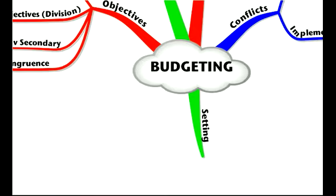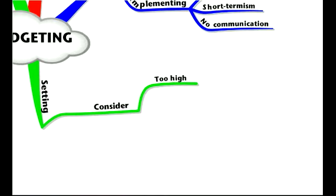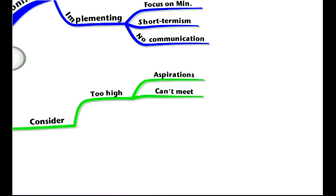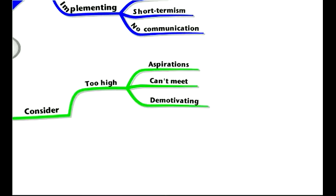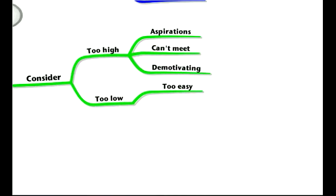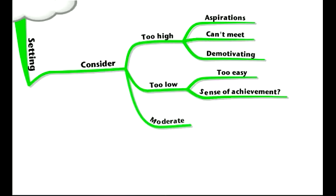When setting the budget we need to consider that if targets are too high, this is called an aspirations budget — but if you can't meet it there's no point having it, and it becomes demotivating. If it's too low it can be too easy, meaning there's no sense of achievement. Is there a solution? Well, maybe you should have a moderate budget. However, this may also encourage managers to build slack into the system.